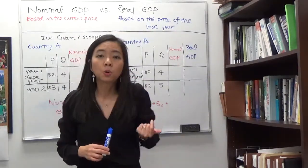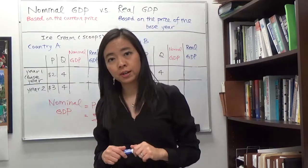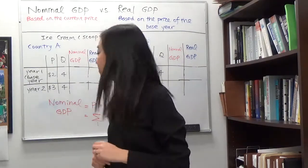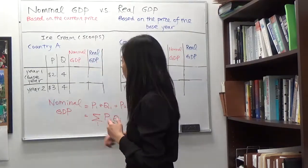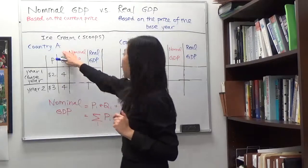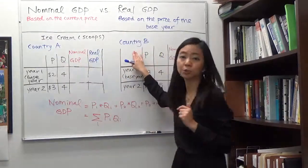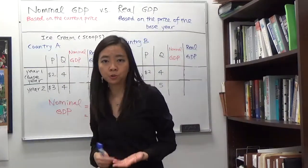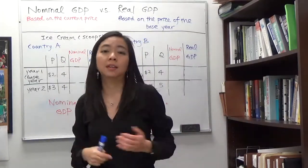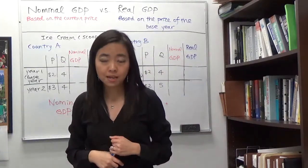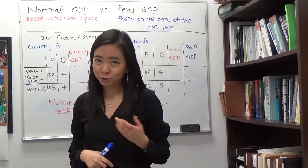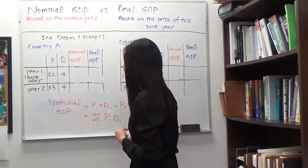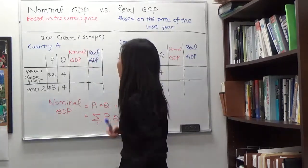We're going to illustrate this with a very simple example. Suppose we have two countries, country A and country B, and they both produce only one good — ice cream, measured in scoops.